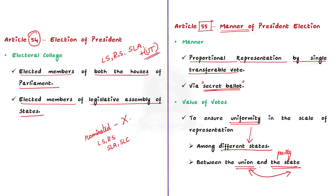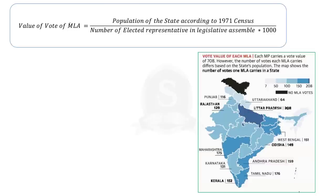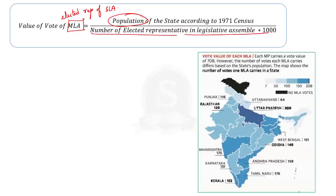How is this uniformity ensured? The votes of MLAs and MPs are assigned a value, and this value is not assigned arbitrarily but through a calculation. Let us see how the value of votes of MLAs and MPs are determined. An MLA is the elected representative of a state legislative assembly. The value of vote of an MLA is obtained by dividing the population of the state by the number of elected representatives in the legislative assembly. The population of the state is taken from the 1971 census. This value is further divided by 1000.